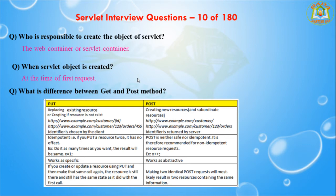The next question is: when is the servlet object created? The servlet object is created at the time of the first request. After the object is created, from the second request onwards, the same object is reused. The next question is: what is the difference between GET and POST methods?